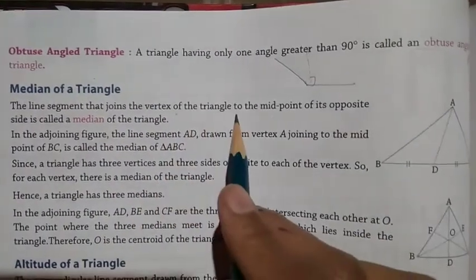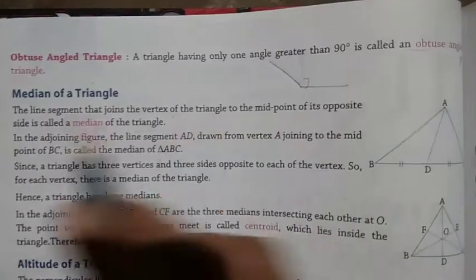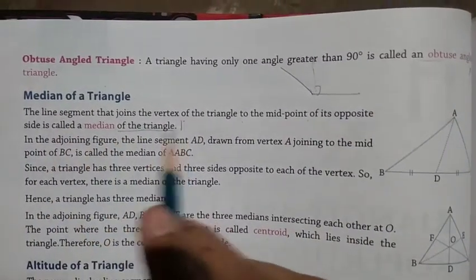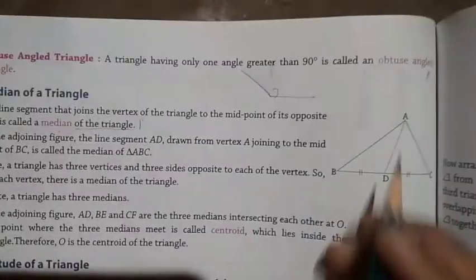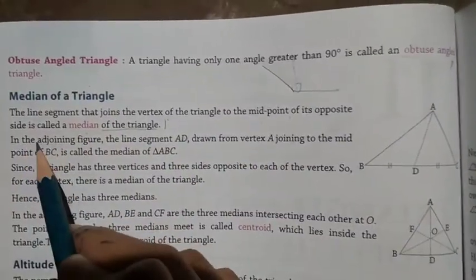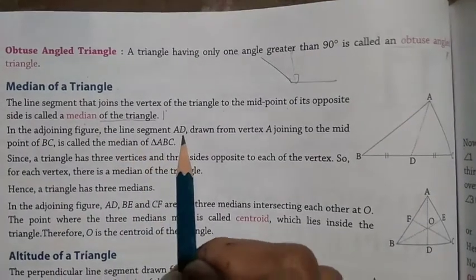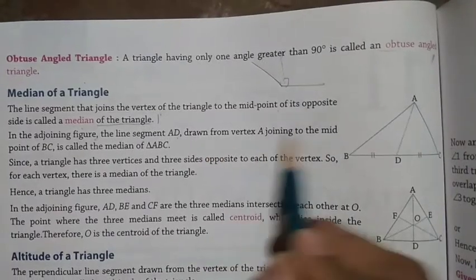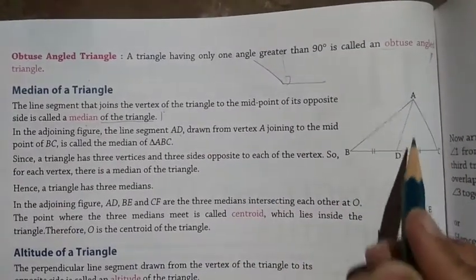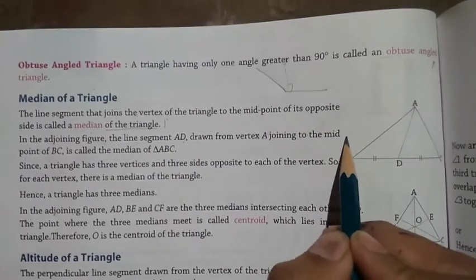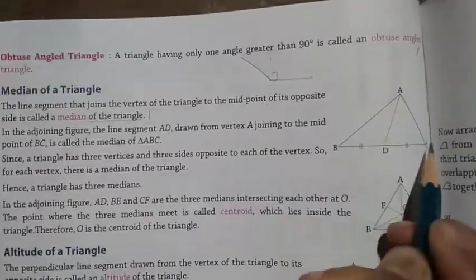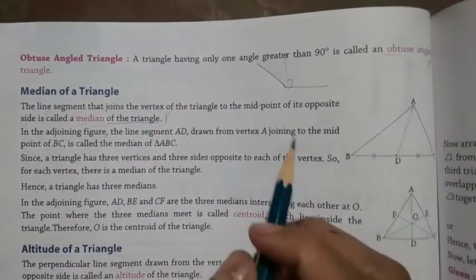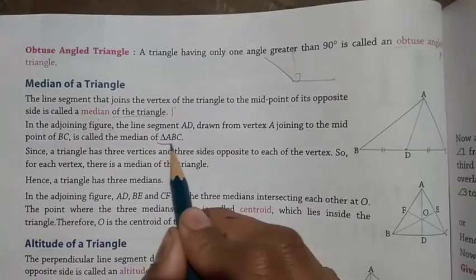The median of a triangle: The line segment that joins the vertex of a triangle to the midpoint of its opposite side is called the median of the triangle. In the adjoining figure, the line segment AD drawn from vertex A to the midpoint of BC is called the median of triangle ABC.